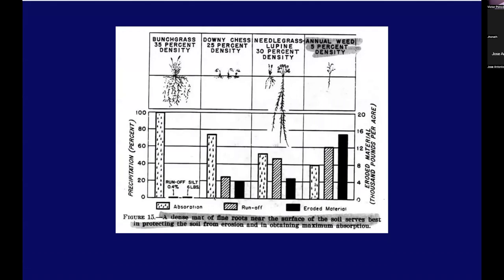A dense mat of fine roots near the surface serves best in protecting soil from erosion and obtaining maximum absorption. Here, bunch grass at 35% density — the natural situation — shows hardly any runoff or silt. This is what existed in the central states around Oklahoma before agricultural development. Downy chess, a weed, produces some sediment. Needle grass and lupine at 30% density also produce some eroded material. For annual weeds, where there's no water, weeds have no roots and therefore you get a lot of eroded material. This graphical picture depicts it clearly.